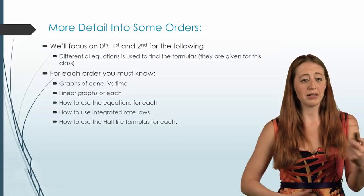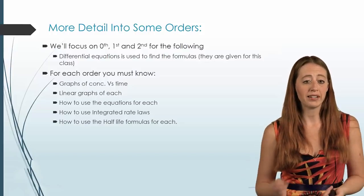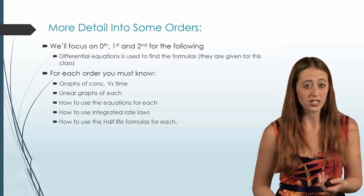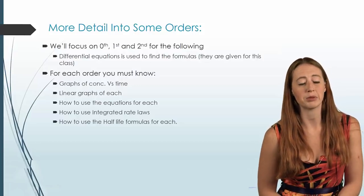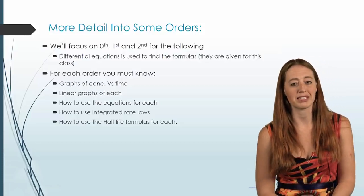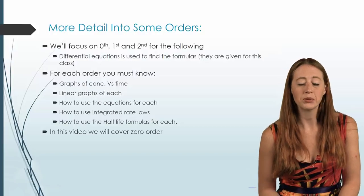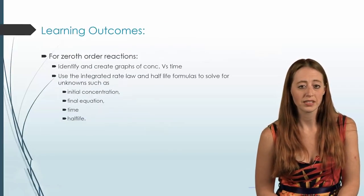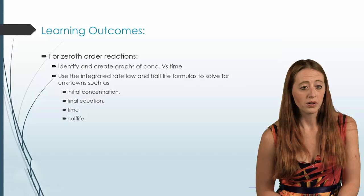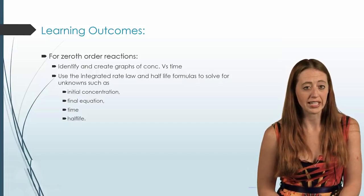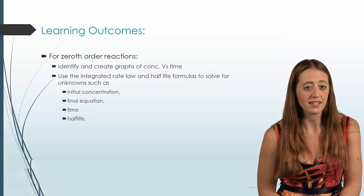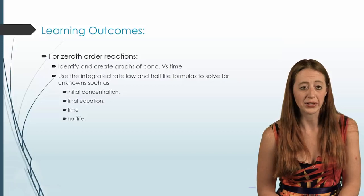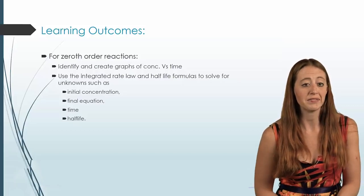You're going to need to interconvert between the half-lives, the final and initial concentrations, and time — that will make more sense once we have some examples. We're going to give you the integrated rate laws and the half-lives. In this video we're just covering zero order. For zero order, you should be able to create that graph and use the half-life formulas and integrated rate laws to convert between any of these four things.